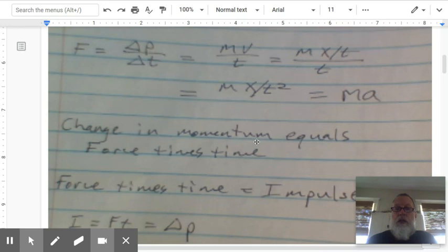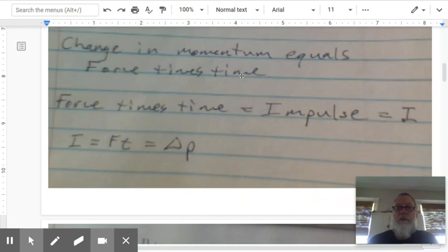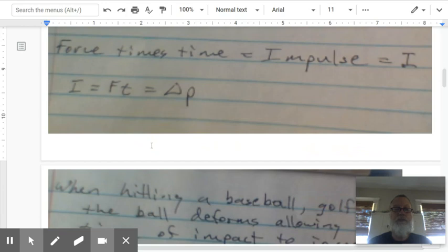So change in momentum equals force times time. Force times time is given the name impulse, and the algebraic term is capital I. So impulse equals force times time, which equals the change in momentum. If you increase force, you increase change in momentum. If you increase time, you increase change in momentum.